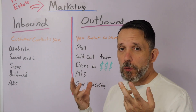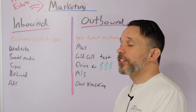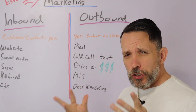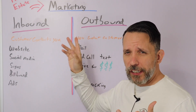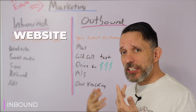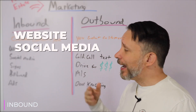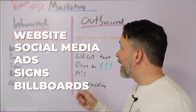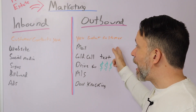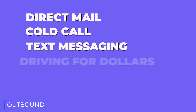For real estate marketing for motivated sellers, I've broken it up into two different categories of marketing: inbound and outbound. Inbound includes websites, social media, ads, signs, and billboards. Outbound includes direct mail, cold calling, text messaging campaigns,